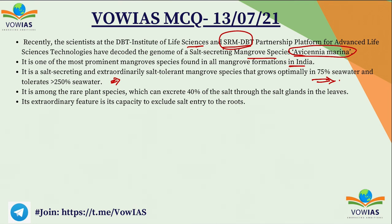Avicinia marina is among the rare species which can excrete 40% of salt through salt sweat glands. It also has an extraordinary feature in its capacity to exclude salt from entering the roots. This extraordinary capability makes it a remarkable species. Avicinia marina is a mangrove which is found majorly in India.